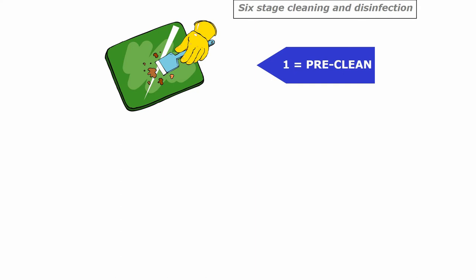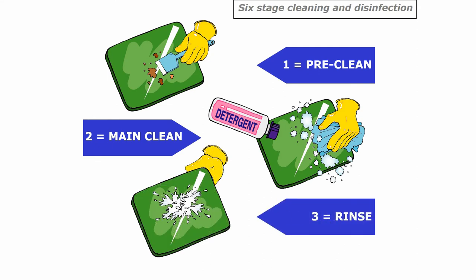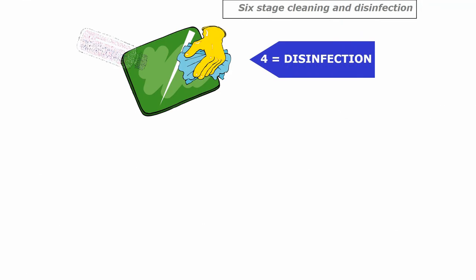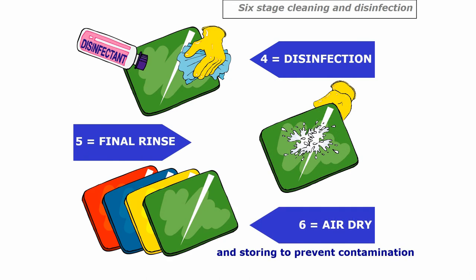Let's look at the six-stage cleaning and disinfection process, using a preparation board as an example. First, a pre-clean: the initial removal of any large food particles, which could go into a recycling receptacle. Then a main clean using detergent with water — this doesn't kill or reduce bacteria, it just removes dirt, grease, and grime. Then a rinse to remove any remaining detergent. Next, a disinfection phase using a chemical disinfectant. Then a final rinse to remove any chemical residue. Finally, air dry and store to avoid contamination.